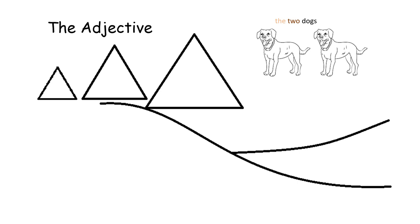You can see here that I have colored the word two dark brown. It describes how many dogs there are. Therefore, the word two is an adjective.